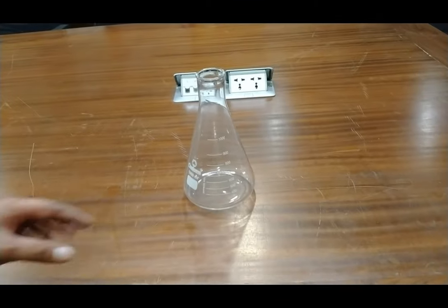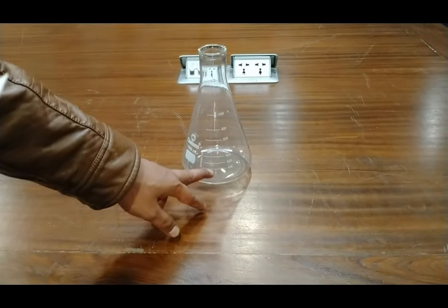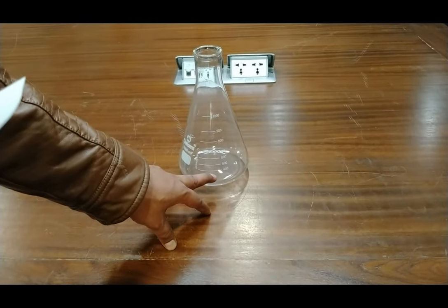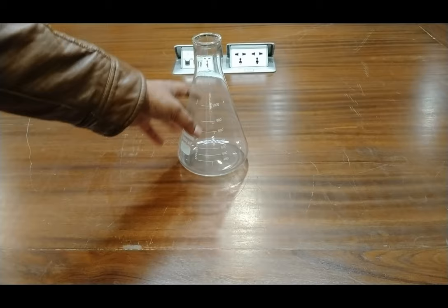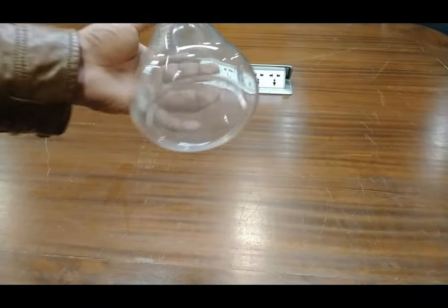The specifications of this conical flask: maximum capacity is 1000 ml, and the least count is 400 ml. You can use this conical flask in chemical laboratories. The material is borosilicate glass.